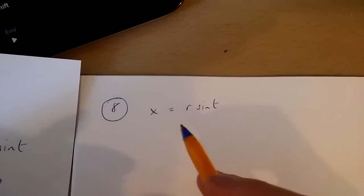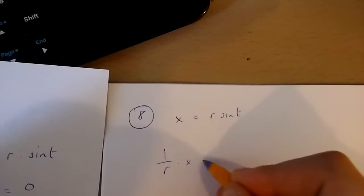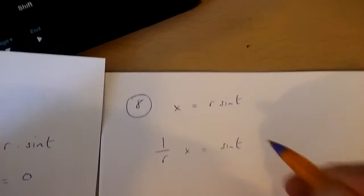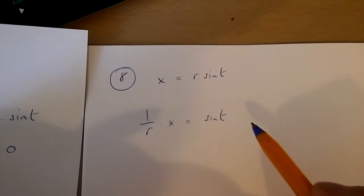Now, I'm going to divide both sides of this equation by r. If I do this, I get 1 over r times x is equal to sine t.